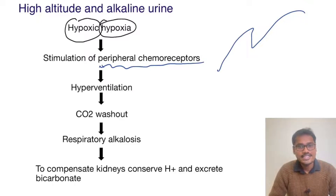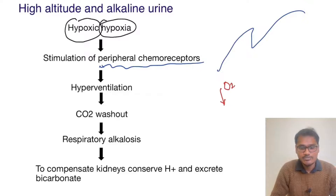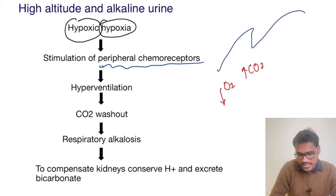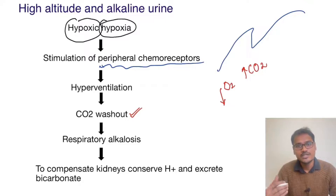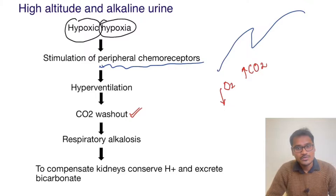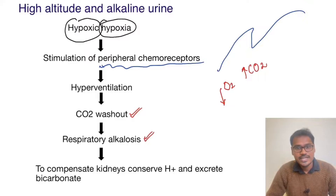These peripheral chemoreceptors will cause excessive ventilation. As an advantage, more and more O2 can be taken in. But at the same time, there is raised CO2 washout. Because of this, CO2 availability becomes very less, so the respiratory drive for further respiration will be reduced — which is very dangerous. Because of the CO2 washout, it leads to respiratory alkalosis.